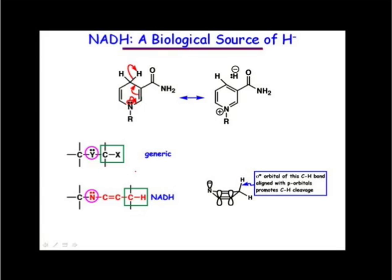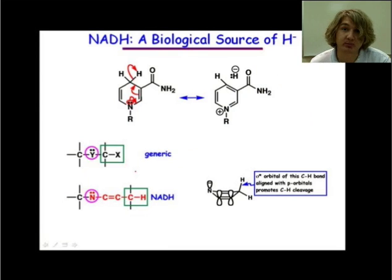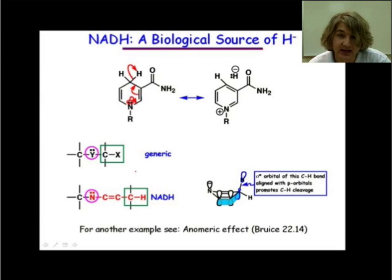If we look at the sigma-star orbital, that's the orbital we would be breaking here, the sigma-star orbital from our CH. It's aligned very well with the P orbitals in the rest of that ring. We're shading our orbitals here. We have very good overlap between the sigma-star lobe on the bottom there and the P orbitals in the rest of that ring. If you want to see another example, you can check out the anomeric effect in Bruce, Chapter 22, Section 14.